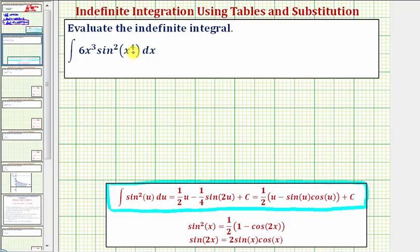So we'll let u equal x to the fourth. If we let u equal x to the fourth, the next step is to find differential u or du, which is equal to the derivative of x to the fourth with respect to x, times dx. So that would be 4x to the third dx.